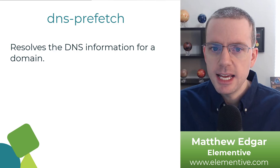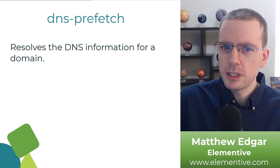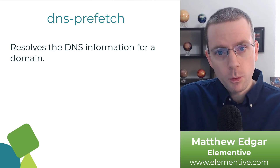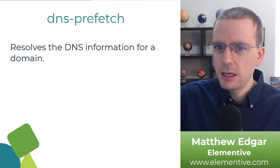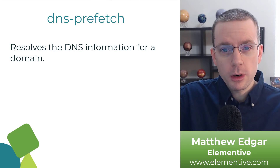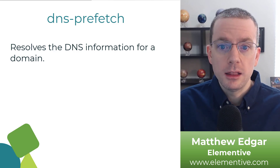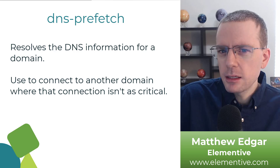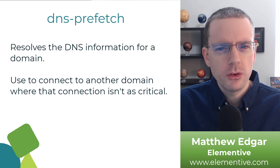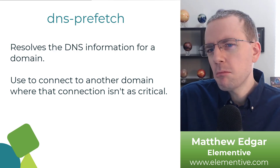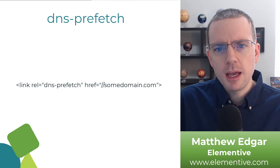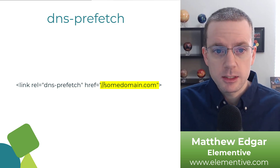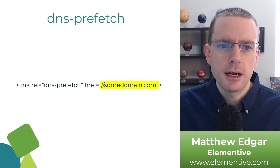The next thing we have is DNS prefetch. This is similar to preconnect, but it only resolves the DNS information — meaning it's only translating the domain name into an IP address. That saves a step along the way, but it doesn't make a full connection to the domain like a preconnect does. If we think about preconnect as opening the door, in the case of DNS prefetch we're only unlocking that door. So this is a lighter version of preconnect. You'd want to use this when you know you'll need to connect to a domain in the future, but that connection isn't as critical — for example, connecting to a third-party resource like a payment system. This code will prefetch the DNS for somedomain.com, with the link tag rel set to dns-prefetch and the href set to that domain.